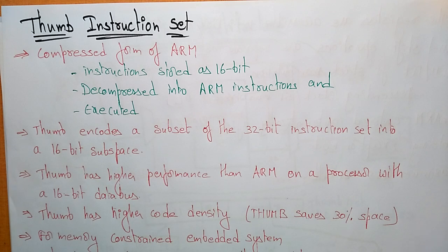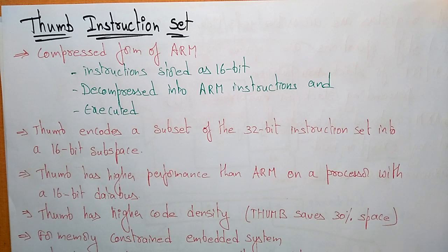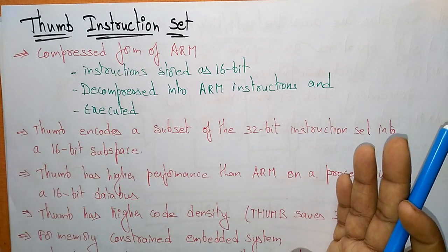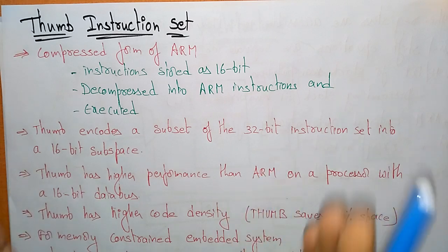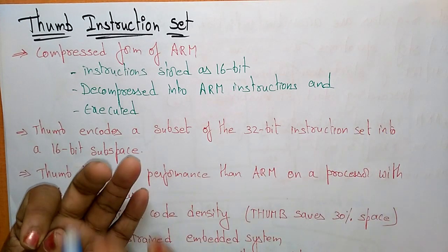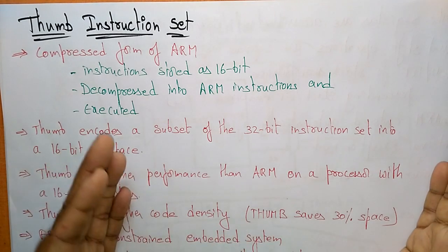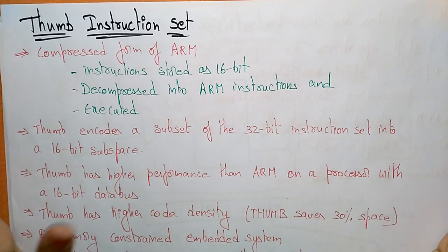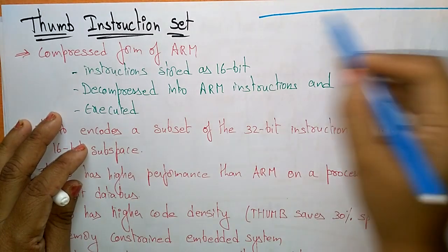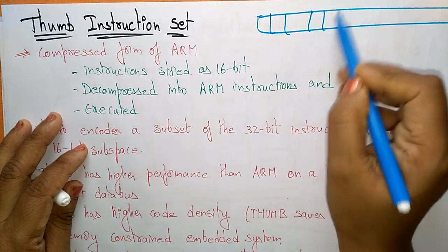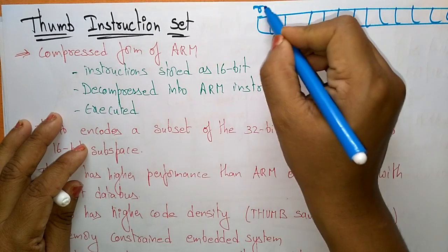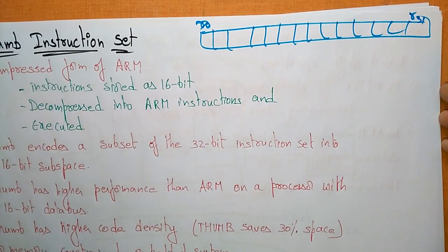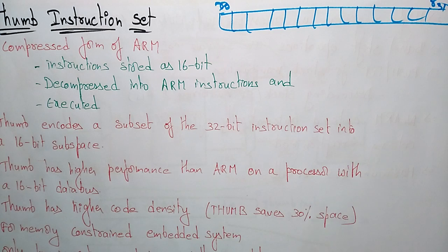ARM has its own instruction set which is 32 bits long. Bits 31 down to 28 are selected for flags like the zero bit, sign bit, overflow bit, and so on. One bit indicates whether Thumb mode is active or not — that is the CPSR. The ARM core has all registers from R0 to R15 for general use, plus additional special registers.